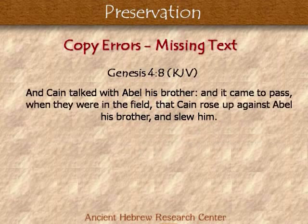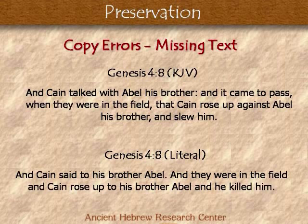In Bereshit 4:8, from the King James Version: 'And Cain talked with Abel his brother, and it came to pass, when they were in the field, that Cain rose up against Abel his brother and slew him.' That all makes sense. But looking at it literally: 'And Cain said to his brother Abel... and they were in the field, and Cain rose up to his brother Abel, and he killed him.' Is it missing anything? Yes — it's missing what he said. There's nothing there, but there should be something there.